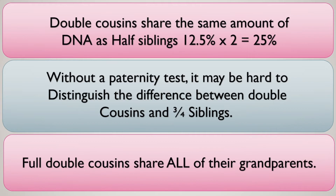Full double cousins share all of their grandparents. No family is equal — you have half siblings, full siblings, and three-quarter siblings. This is based on the point that if your parent and their sibling are full siblings on both sides for the double cousin relationship to occur, then yes, you would be full double cousins.